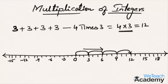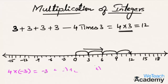Now let's discuss what will be 4 multiplied with minus 3. That is nothing but we are adding minus 3, 4 times. On the number line we can see this as 4 jumps each of 3 steps towards the left side on the number line.